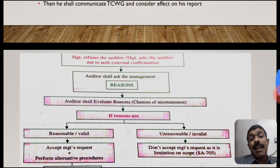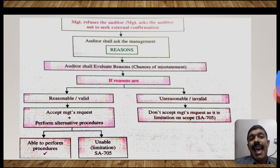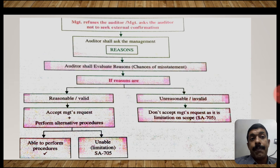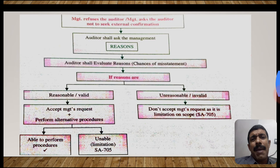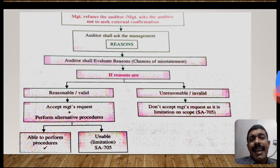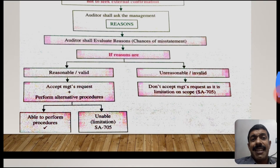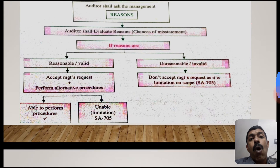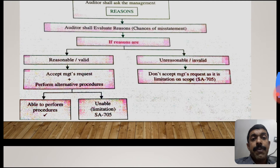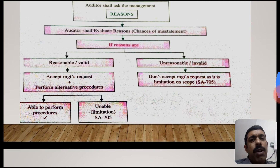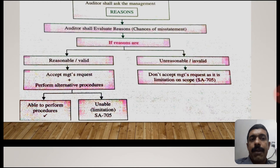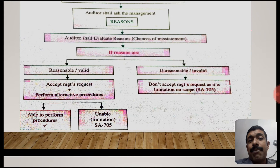If management's refusal is unreasonable or the auditor is unable to perform an alternative procedure, the auditor shall communicate that matter to those charged with governance and consider the effect on the audit report - this is a limitation of scope under SA 705. In summary: if the reason for refusal is valid, accept management's request and perform alternative audit procedures. If the auditor is unable to perform alternative procedures, modify the audit report under SA 705.